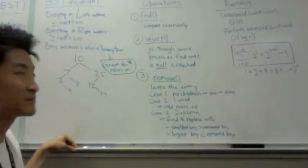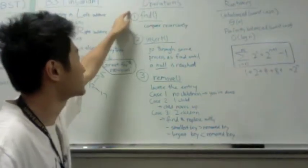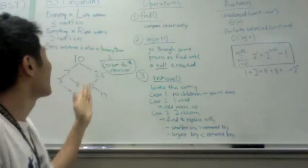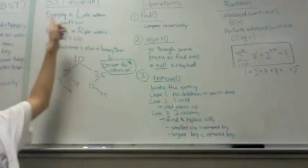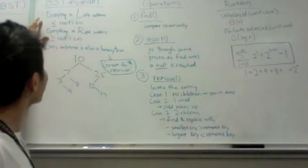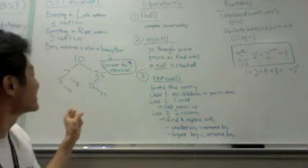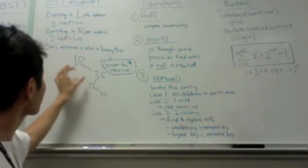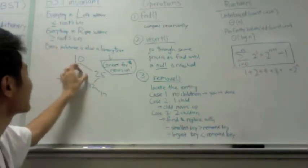And so now let's talk about some algorithms, some operations that we'll be using. The first one is find. You use find by following the binary search tree invariant. So for example, if you wanted to find 12,